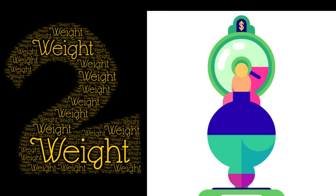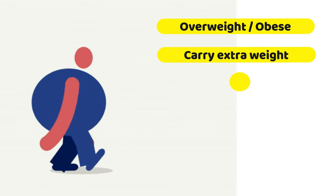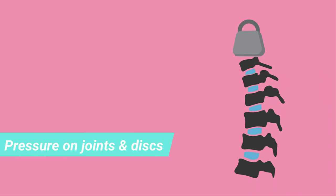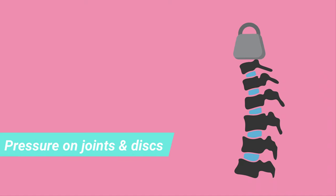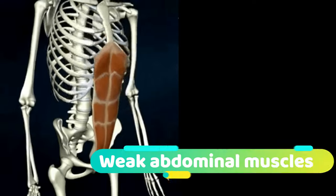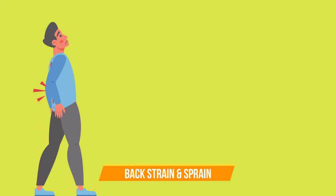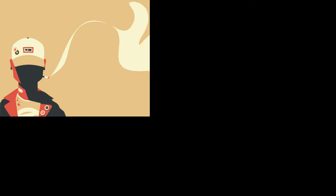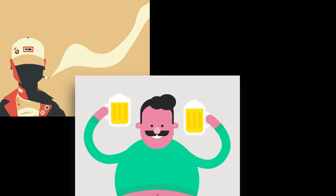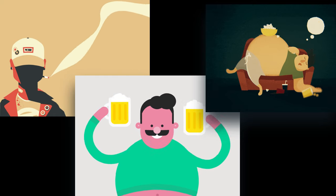Second is weight. Overweight or obese people carry extra weight and are more likely to have back pain. Excess weight puts pressure on their joints and discs, and this is what leads to back pain. Third is overall health of the individual. Weakened abdominal muscles can't support your spine, and this can lead to back strains and sprains. People who smoke, drink alcohol excessively, or live a sedentary lifestyle also have a higher risk of back pain.